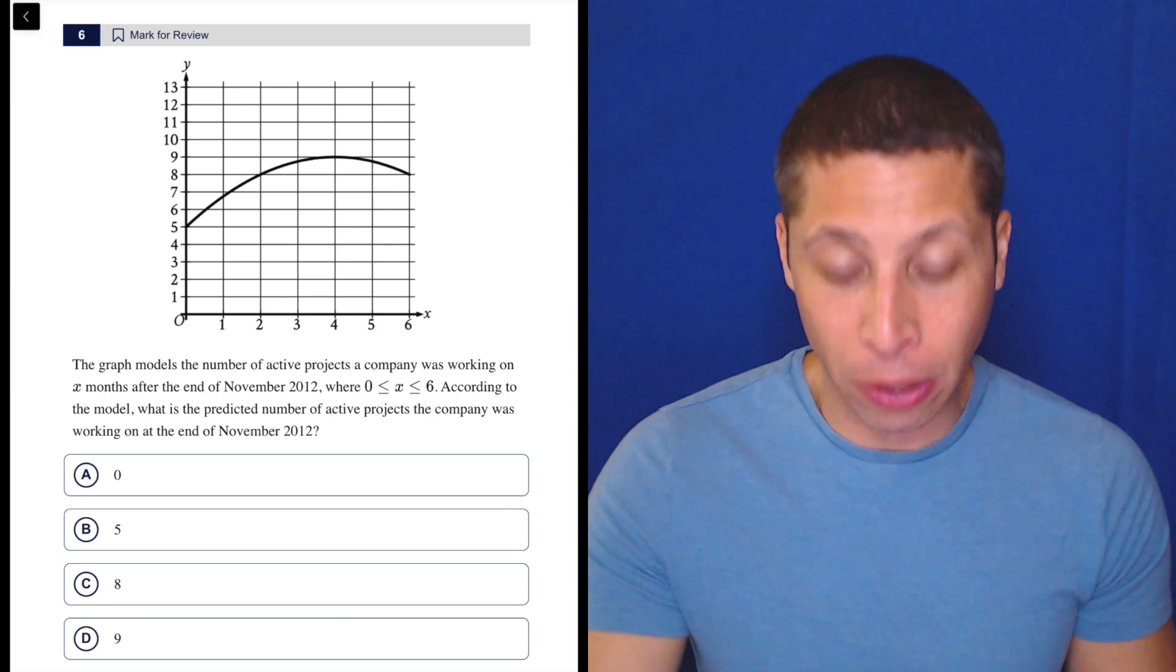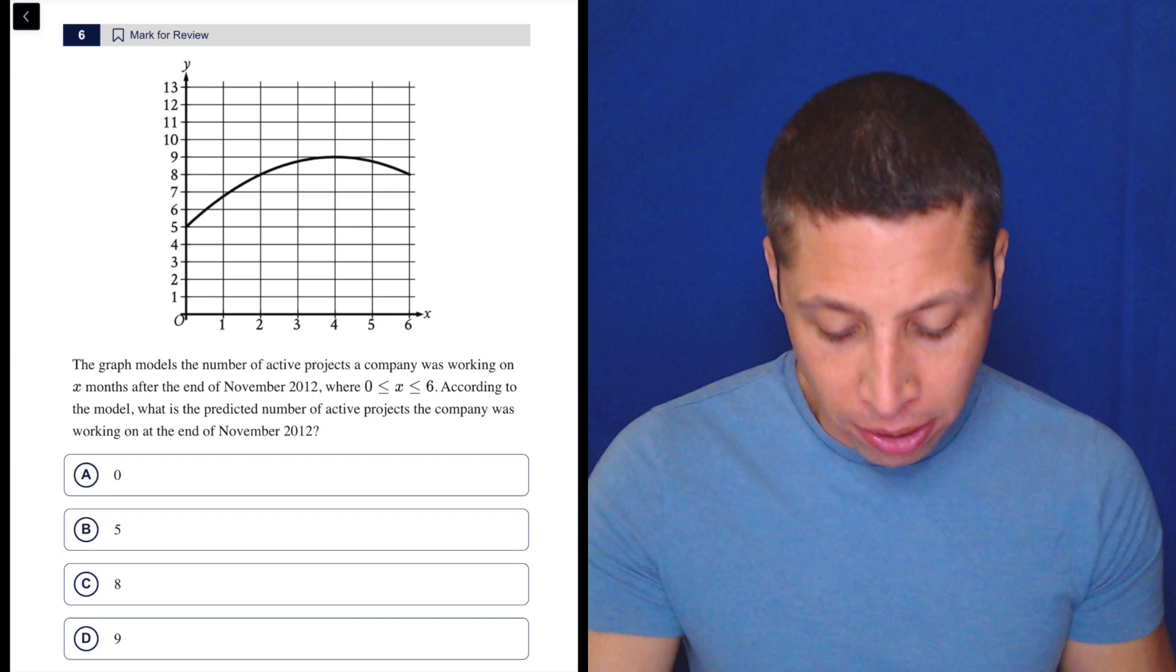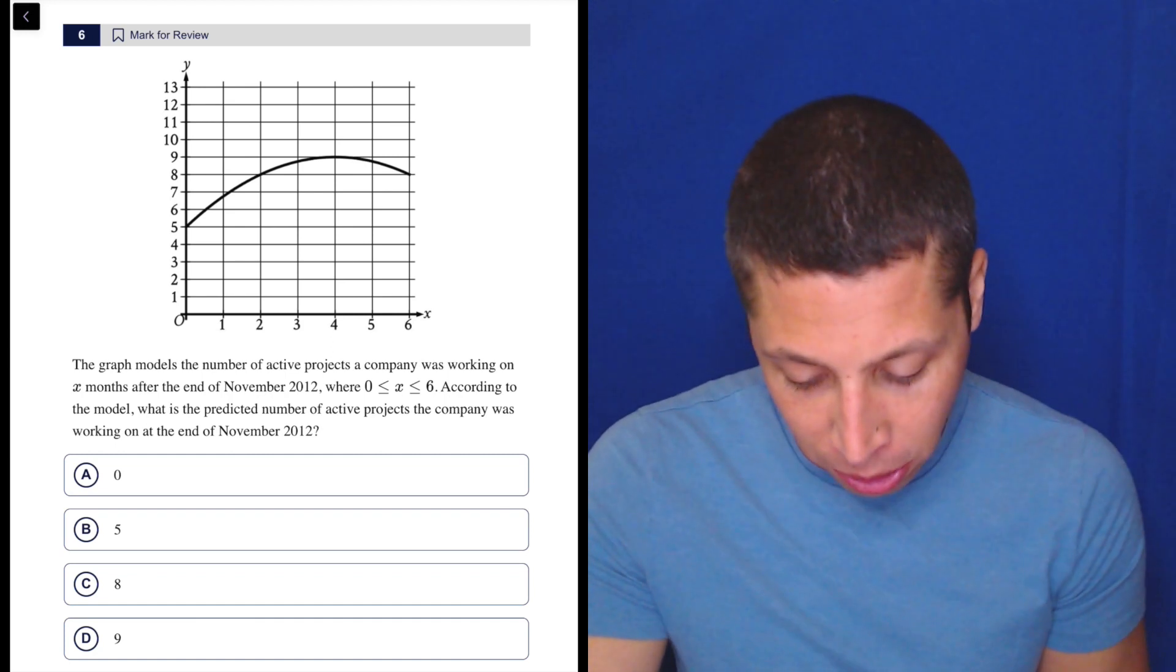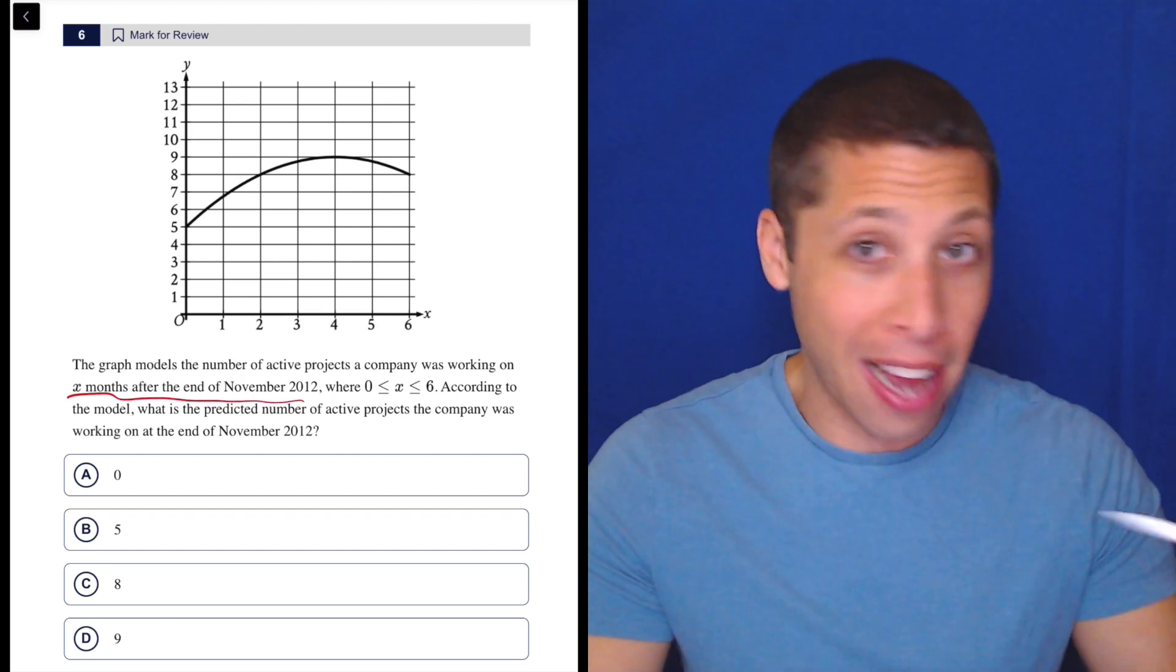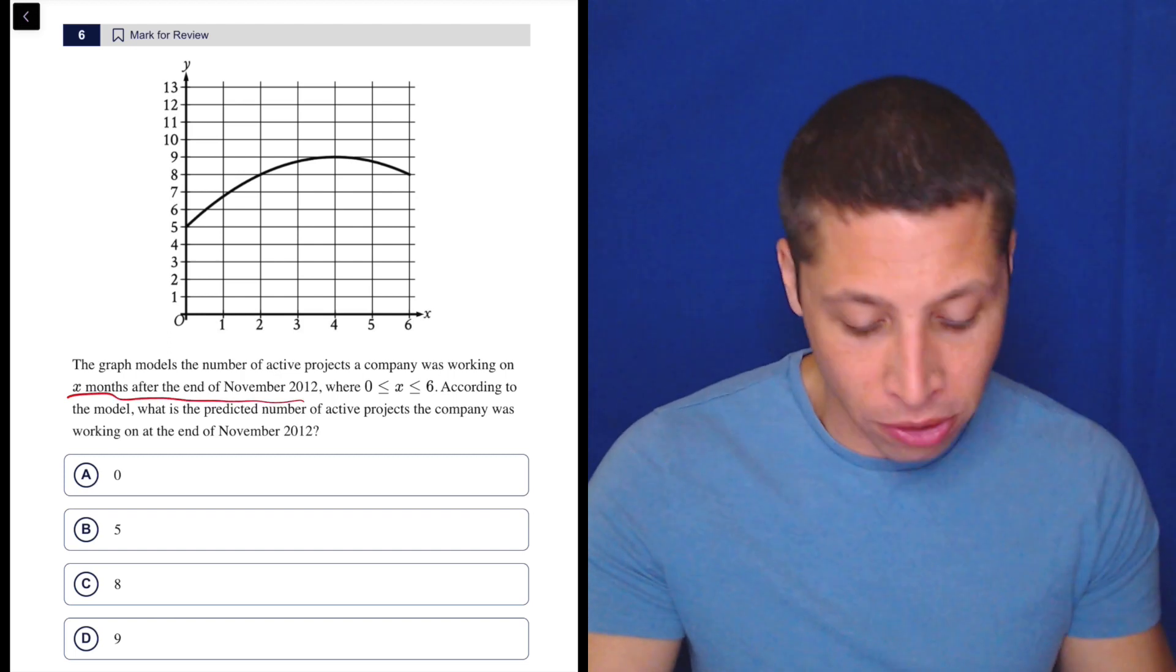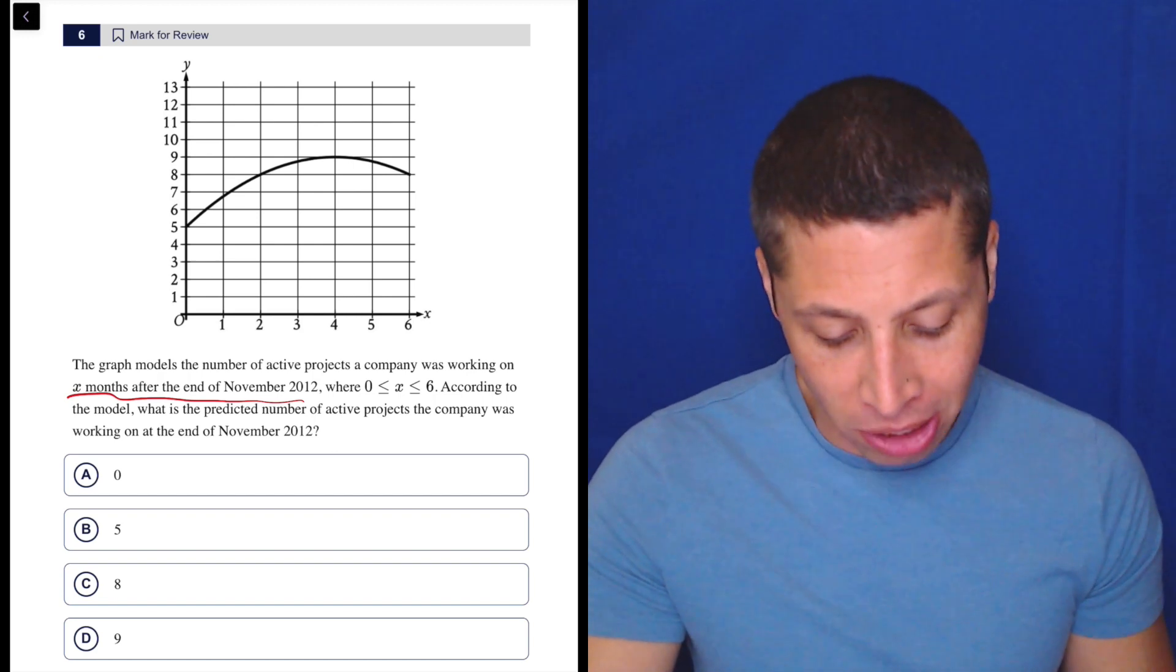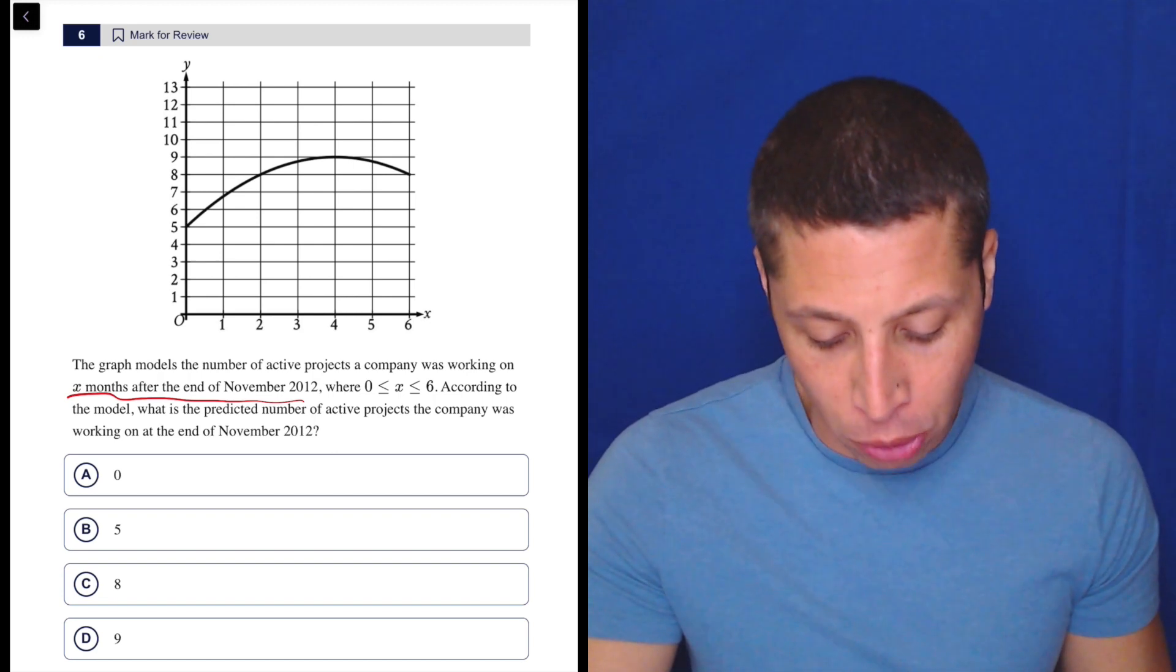Yes, they put a story on it, but look at what the story says. The graph models the number of active projects a company has working on x months after the end of November 2012. Okay, so x is the time after November 2012 where 0 ≤ x ≤ 6. According to the model, what is the predicted number of active projects the company was working on at the end of November 2012?